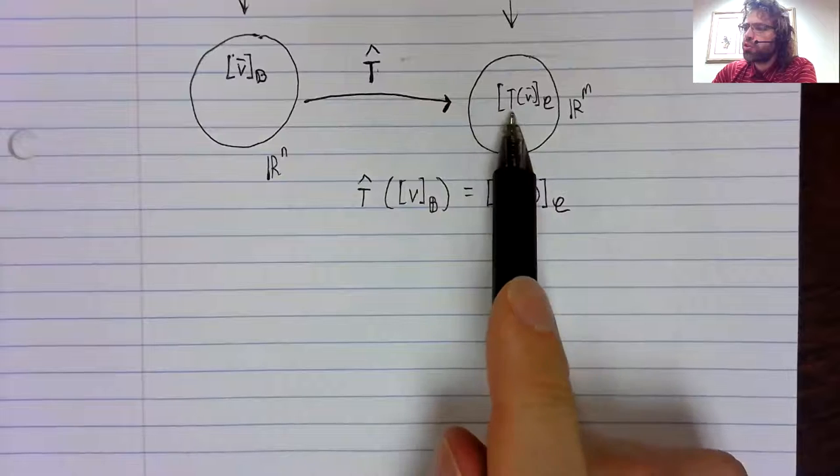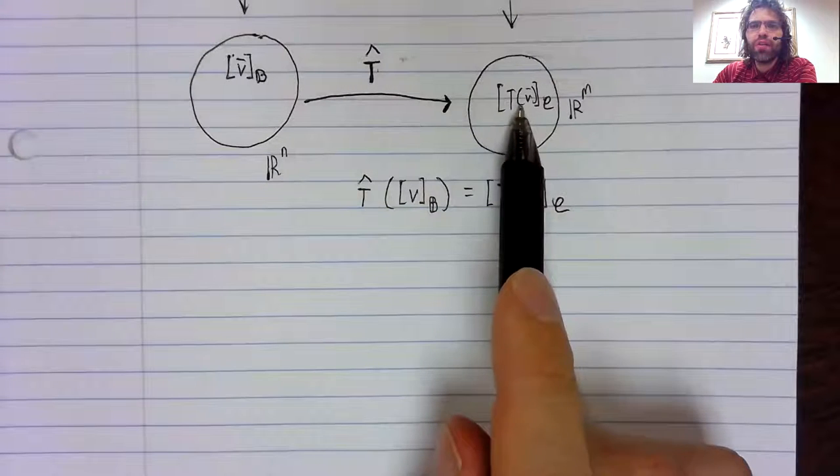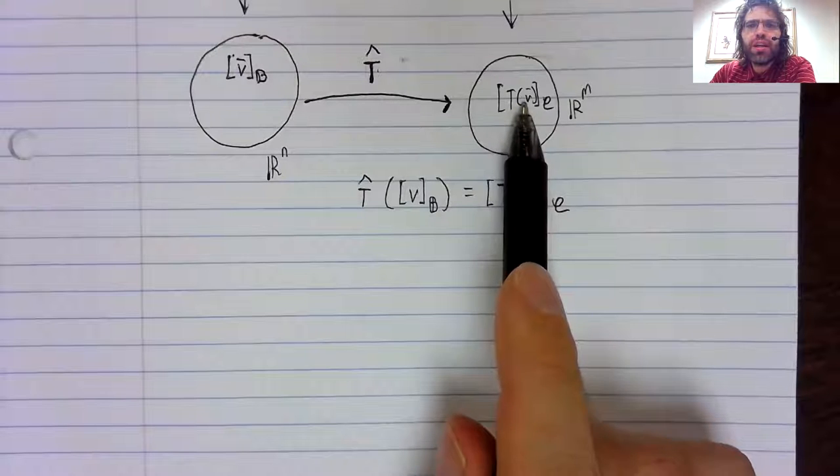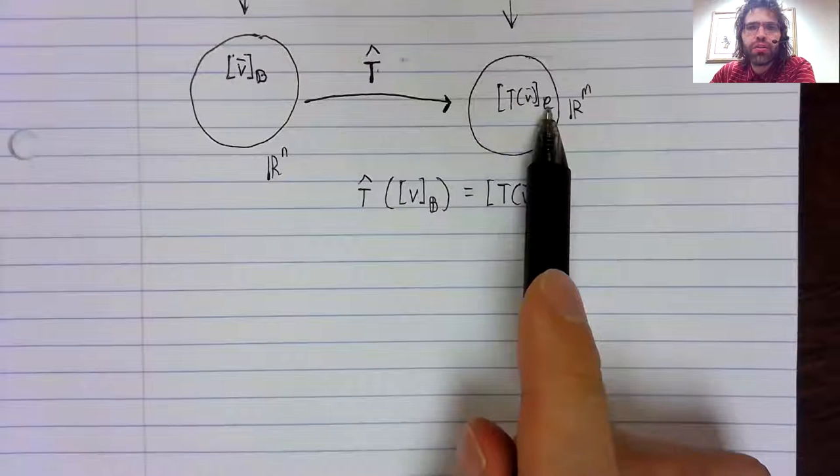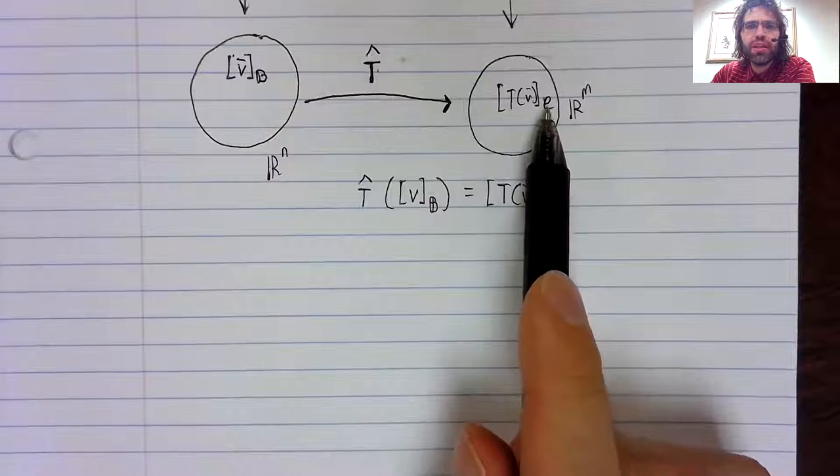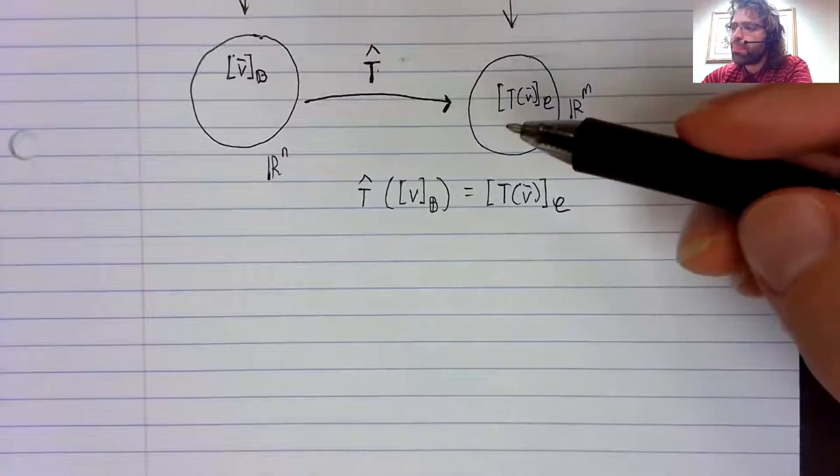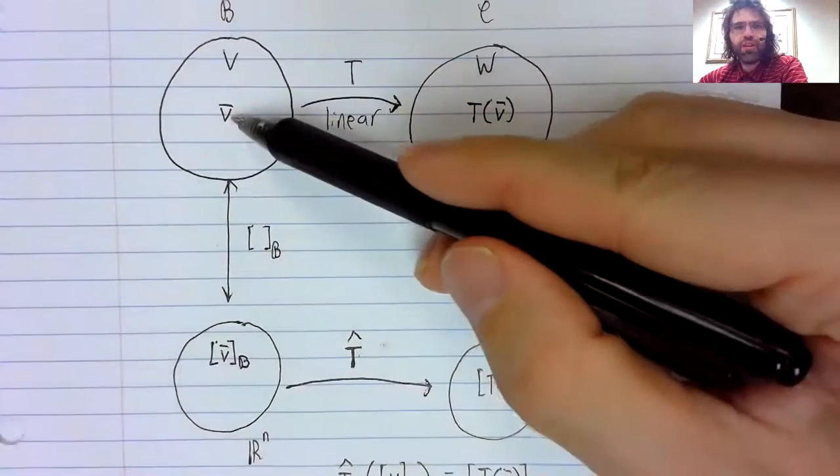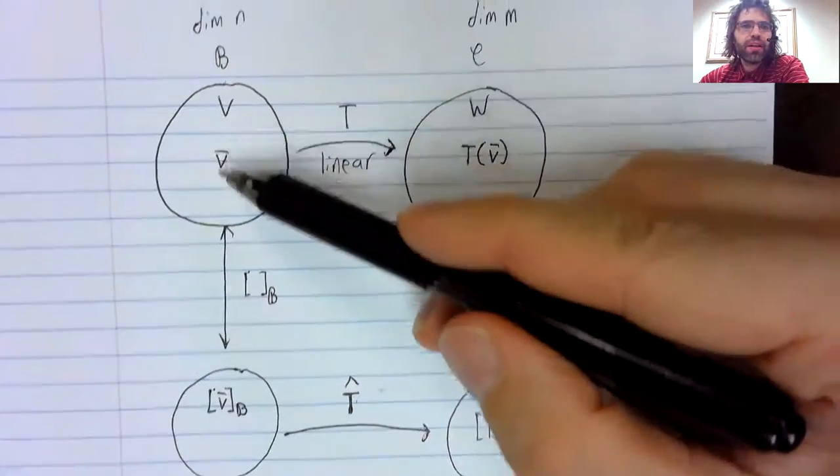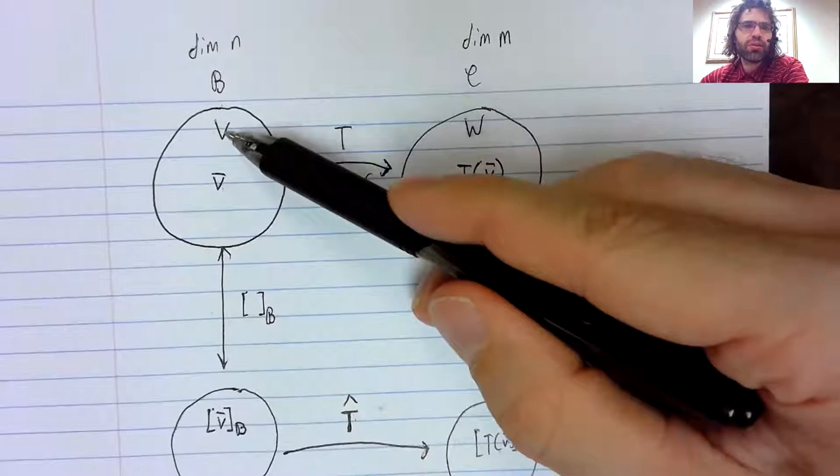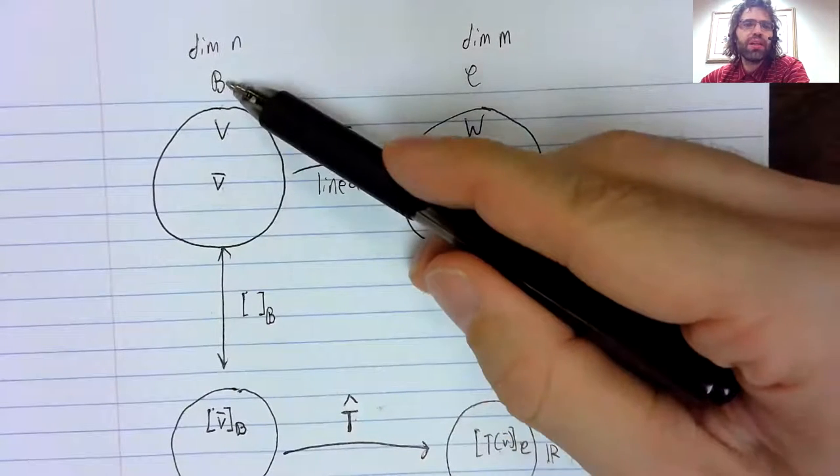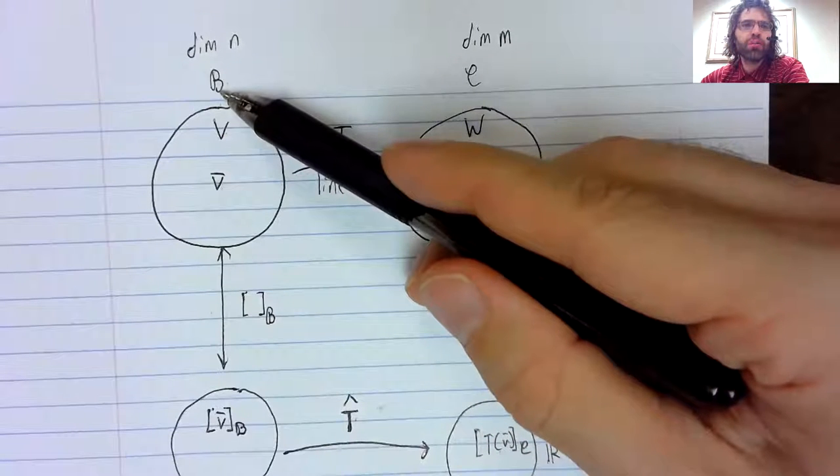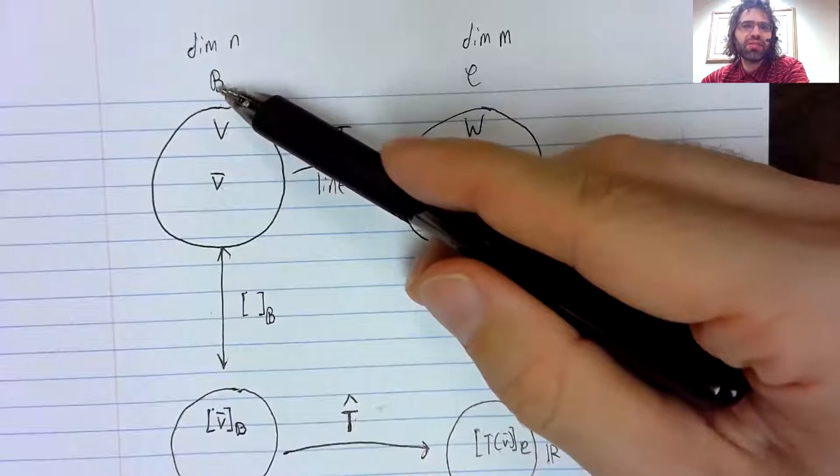Let's start by investigating T of V. When we know a little more about T of V, we can look at the coordinate vector of T of V. Well, as our first step of investigating T of V, let's investigate V. This vector is in this vector space. B is a basis. So we can write this vector in terms of the basis elements.